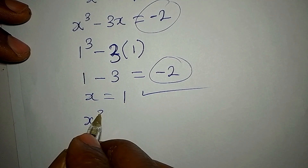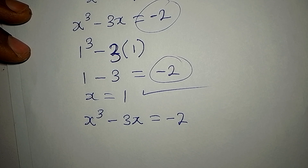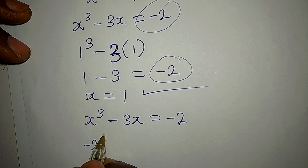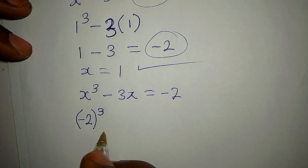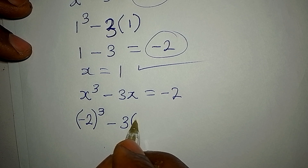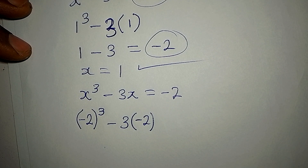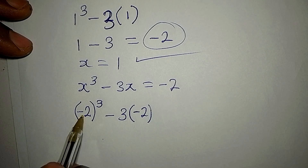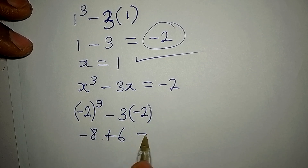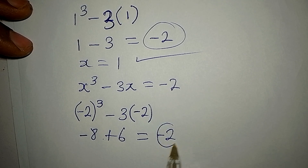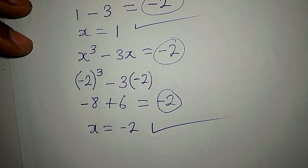Now let's verify x equals negative 2 in the original equation x cubed minus 3x equals negative 2. Substituting: (negative 2) to the power of 3 minus 3 times (negative 2). Make sure to put negative 2 in brackets or you'll get the wrong answer. This gives negative 8 minus negative 6, which equals negative 8 plus 6 equals negative 2. This confirms x equals negative 2 is also a valid solution.